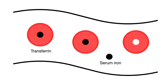Let's now move on to our circulation, which is where we find our serum iron or our circulating iron. Most of our serum iron is bound to transferrin, which is our main iron transport protein. Looking at this diagram, we can see that serum iron is mainly bound to transferrin, though there are open binding sites on some transferrin molecules, and a small amount of serum iron is not bound to transferrin.